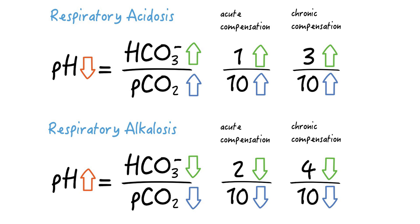What if the bicarb doesn't change by these predicted amounts? That probably means there's an additional metabolic problem. If the bicarb is lower than predicted by these rules, there's also metabolic acidosis, and if it's higher than predicted then there's probably also metabolic alkalosis.